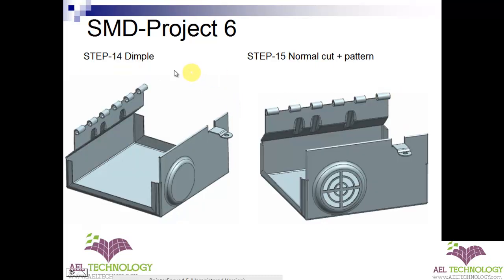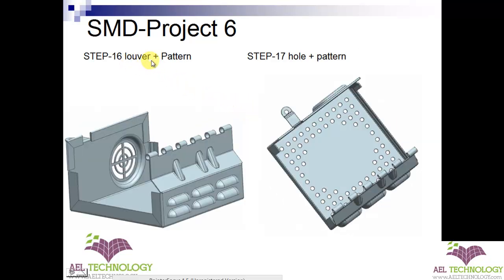After that is done, we will be creating a dimple based on the drawing, and we will create one normal cutout and pattern that cutout in 4 places at 360 degrees, that is 90 degrees each. After that, we will be creating a louver and then pattern it. We will create one feature based on the drawing and then pattern it in direction 1 and direction 2.